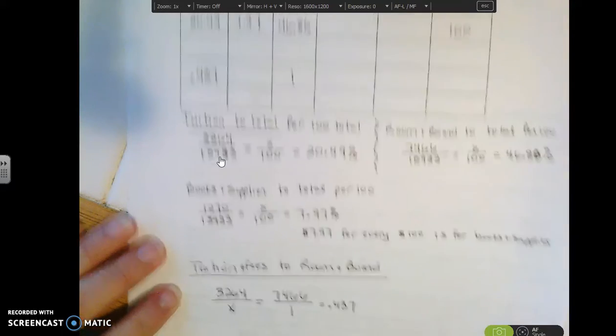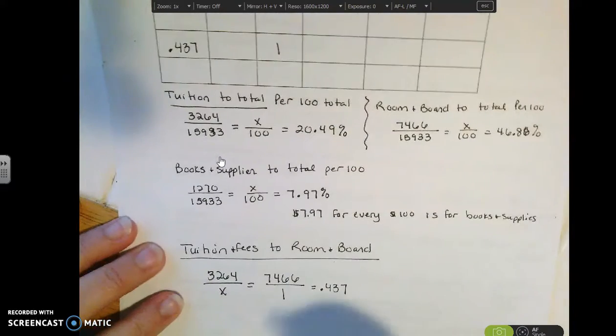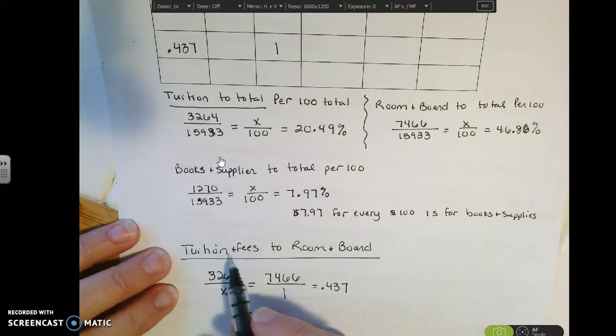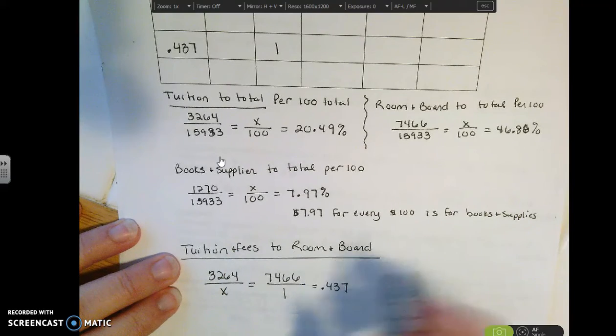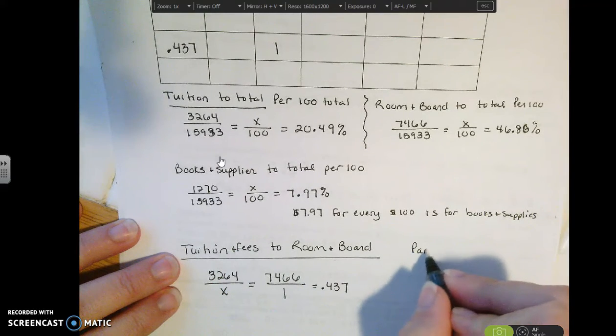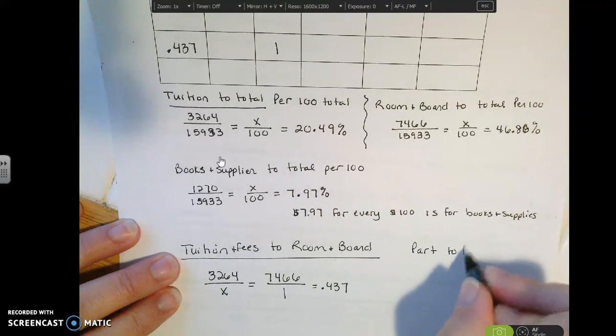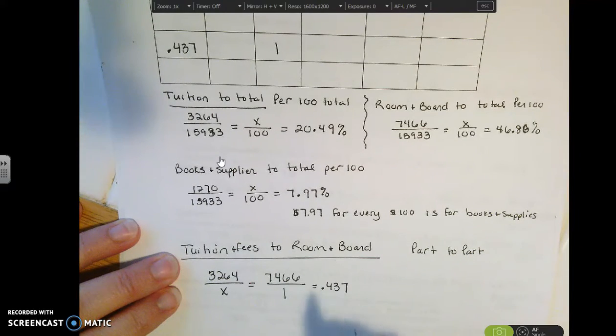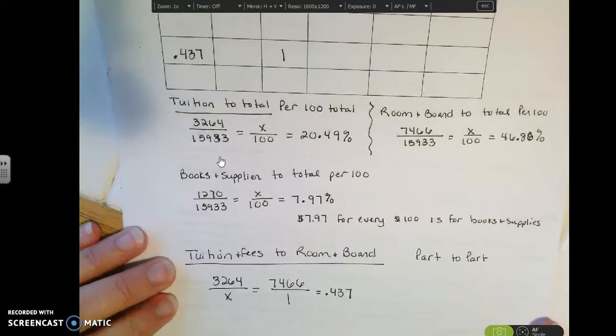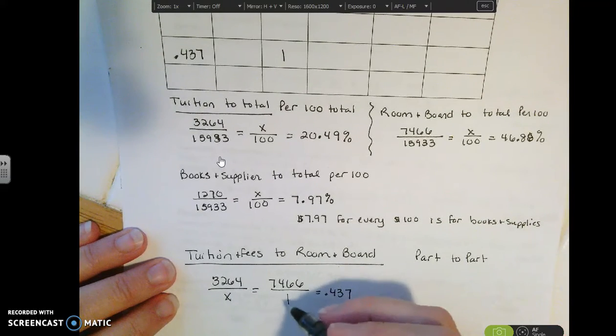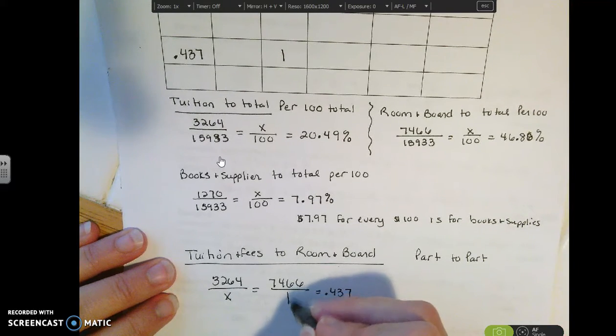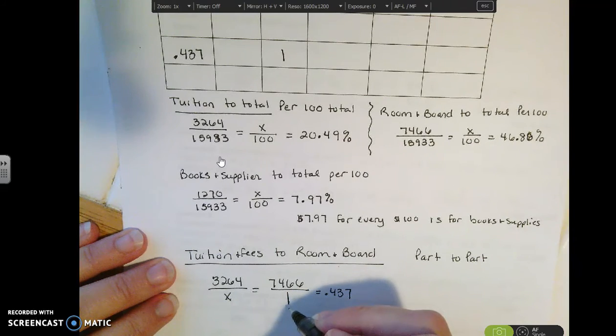All right, and the last comparison would be, what if I want to compare two things? Like I want to compare the tuition and fees to the room and board. This is what we refer to as a part-to-part ratio because we're comparing two parts as opposed to comparing the part to the whole. So again, I have to have some ratio for comparison. So in this case, I'm going to use a 1 as my ratio comparison.